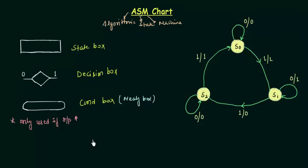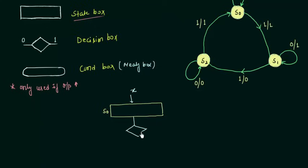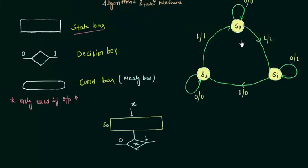Now we have sufficient information to make the ASM chart for this state diagram. The first thing is to make the state box for S0. The input in this state box is X, and we will make the decision box — depending on it, the next state will be decided. If X is 0, we remain on S0 with output equal to 0, so we do not use the condition box because the output is low.